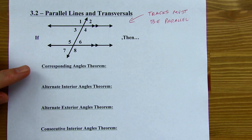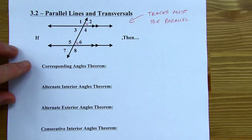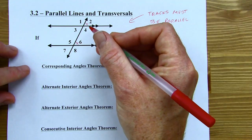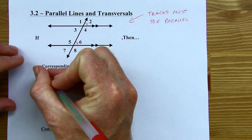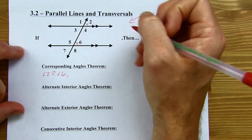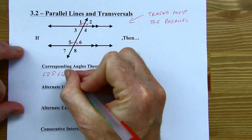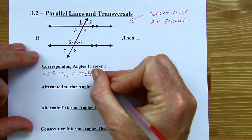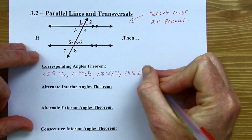The corresponding angles theorem: angle 6 and angle 2 would be corresponding angles — they're both in the top right part of their intersections, and they're going to be congruent always if the tracks are parallel. So if I've got parallel lines, angle 2 is congruent to angle 6. That's not the only set — angles 1 and 5, 3 and 7, and 4 and 8 are also corresponding pairs, and they're all going to be congruent.